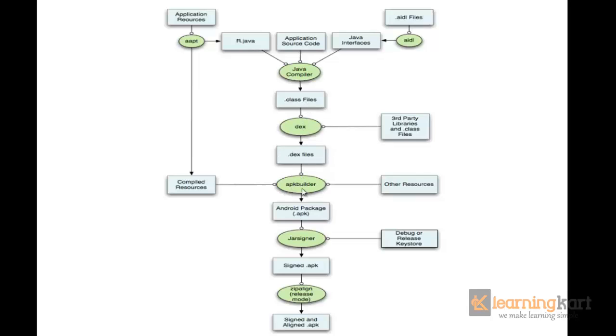This is then operated by an APK builder tool collectively with the compiled resources that have been compiled by the AAPT tool, which is the Android Asset and Packaging Tool. This tool compiles all the resources that we have for the Android app and generates an r.java file.